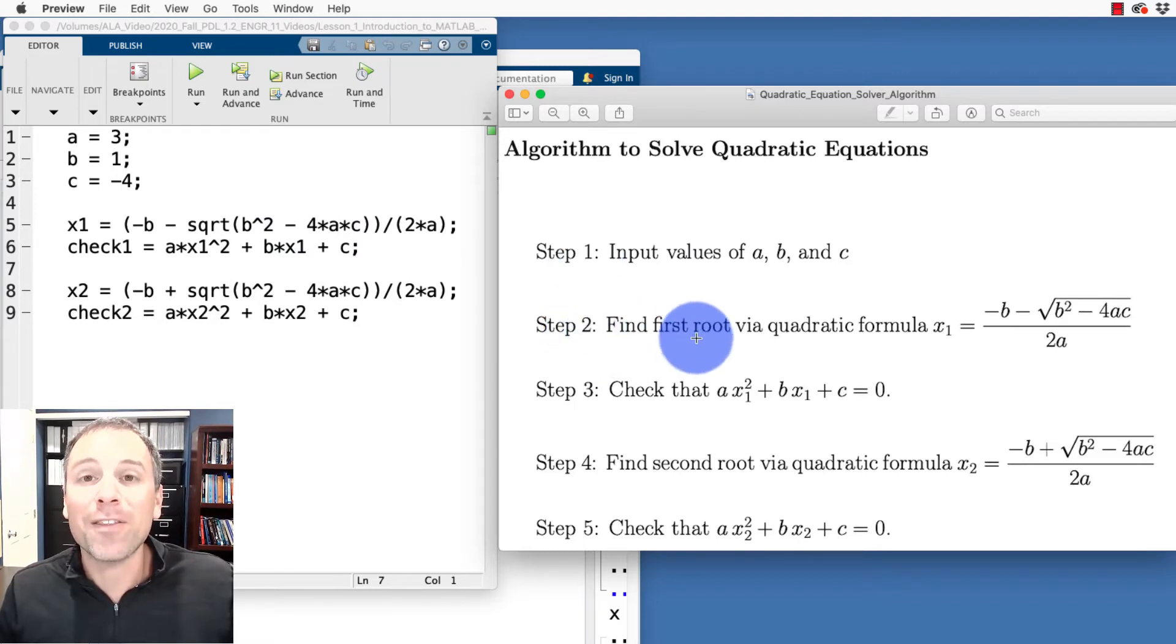The next step of this algorithm is going to be to find the first root using the quadratic formula, where we set x₁ equal to negative b minus the square root of b² minus 4ac divided by 2a. That is in line five.